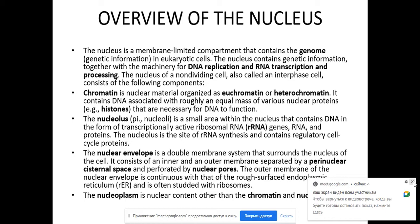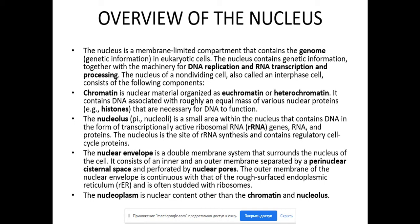Let's start with the overview of the nucleus. It's a membrane-limited compartment. It contains the genome in eukaryotic cells. Eukaryotic cells — just a reminder — we have prokaryotic cells which are bacteria and blue-green cells, and we have eukaryotic cells. We will concentrate our attention on the nucleus. Nucleus contains genetic information, along with the machinery of DNA replication, RNA transcription and processing. You should be sure that the nucleus is not just a container — it's also a very active part of the human cell.